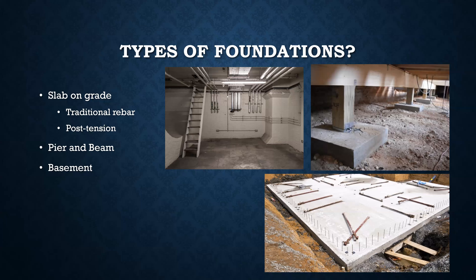A basement is basically the same thing as a pier and beam or crawl space foundation — just taller. Because it's taller and has more going on, the perimeter walls are going to be made out of concrete or some kind of CMU block since they'll be handling more soil pressure and potentially more weight. Basement walls are sometimes up to a normal eight feet, but usually a basement ceiling is a little shorter just to save money because there's a lot of excavation involved.